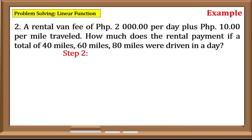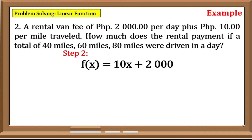Step 2: Generate a function based on the unknowns. Since there is a constant amount payment per day which is 2000, and there is an additional payment of 10 pesos per mile traveled, our function would be f(x) = 10x + 2000.